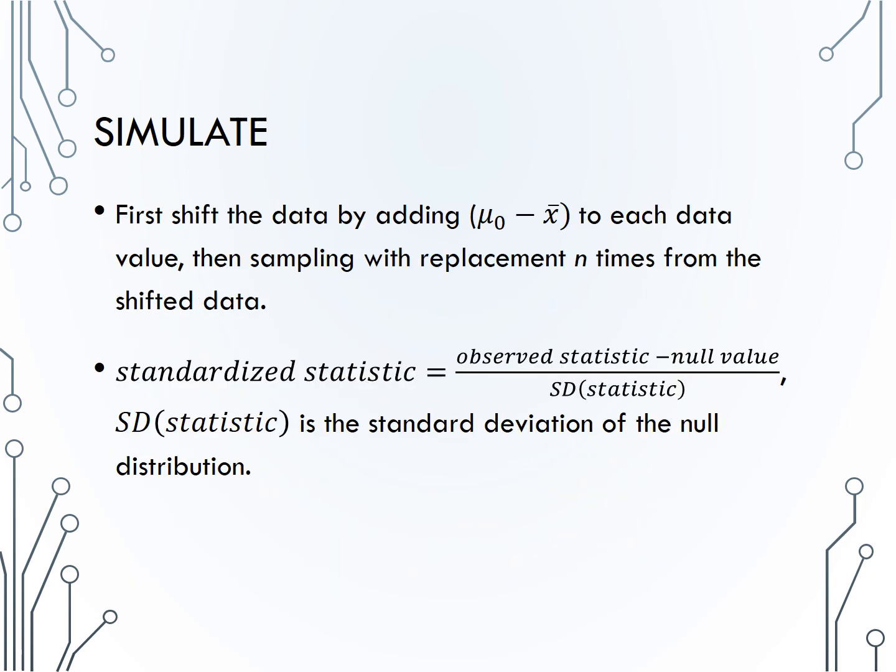How can we simulate a null distribution for a single mean? For one proportion, recall we used spinners or coins because we had a probability of success under the null hypothesis. That is no longer the case. Now we have a population mean under the null hypothesis, so we need to use our one sample to create many samples which assume the null hypothesis is true. We know from the bootstrapping video that bootstrapping will allow us to create many samples from our original data. But how can we force the null hypothesis to be true?